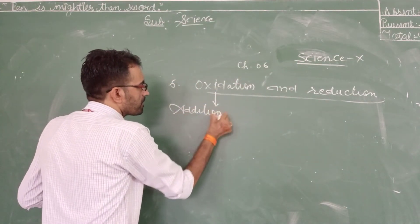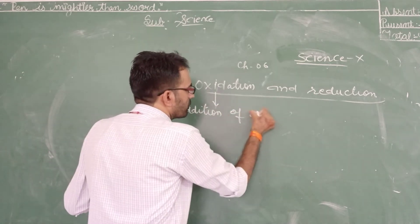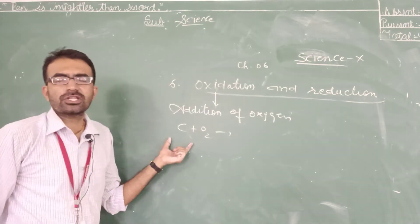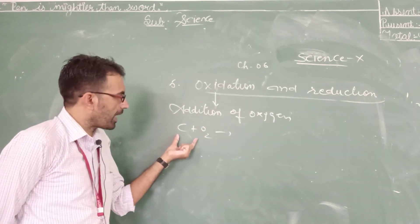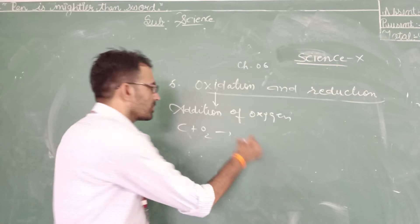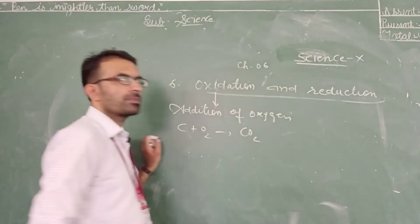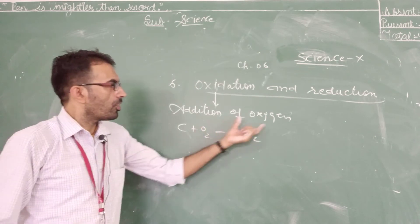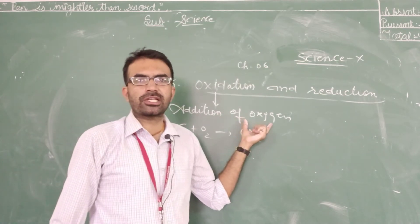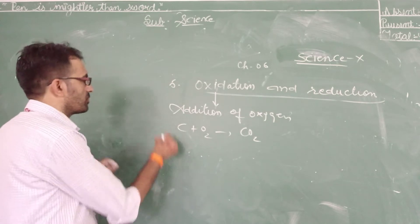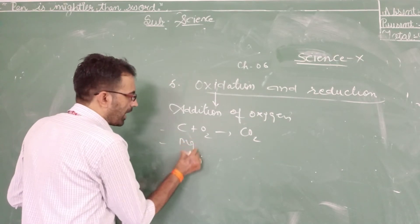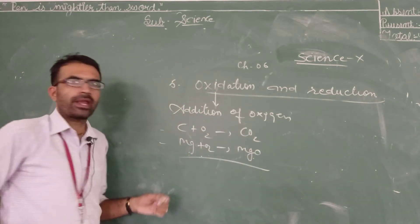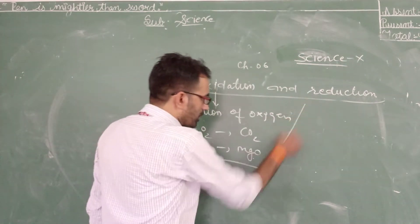Oxidation simply means the addition of oxygen with a metal, element, or atom. For example, C plus O2 gives CO2 — this is a simple example of addition of oxygen. Those chemical reactions in which addition of oxygen takes place are known as oxidation reactions. Another example: Mg plus O2 gives MgO — also an example of an oxidation reaction.